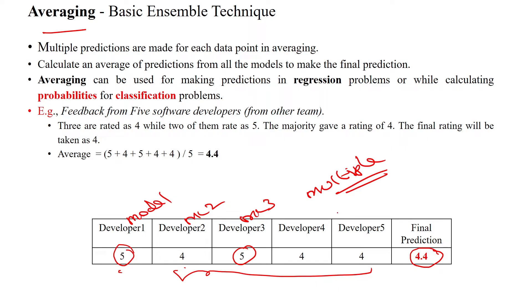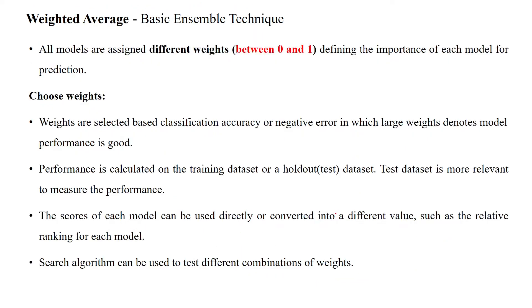The third technique is weighted average. Getting feedback from common people versus software engineers carries different weightage. We assign weightage to common people, software engineers, and people working in academics or industry. The weightage is given in the range between zero and one.